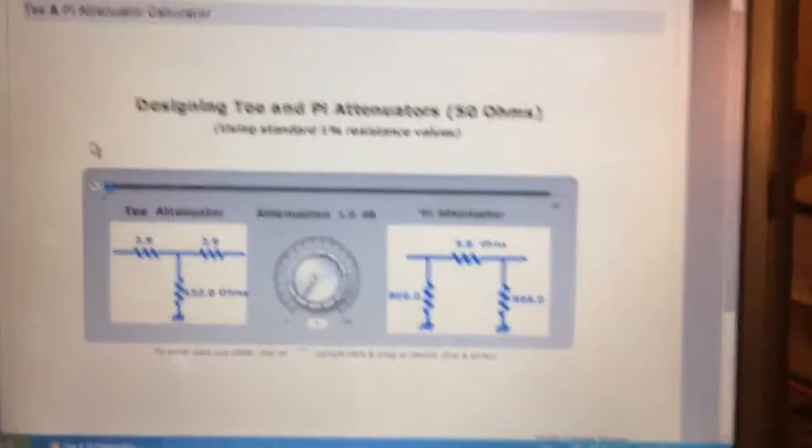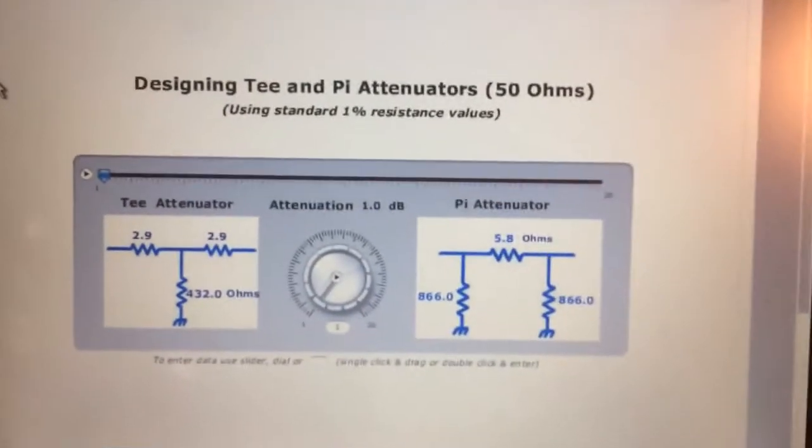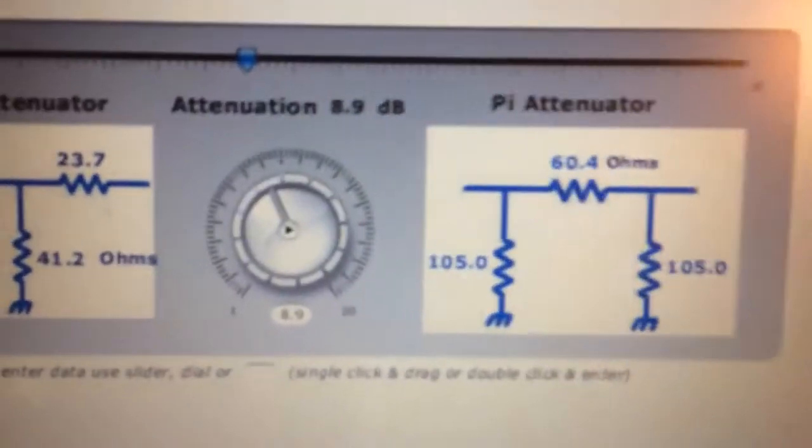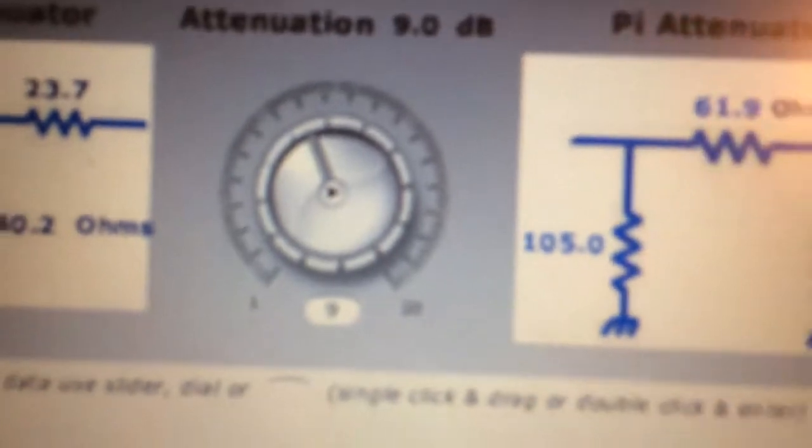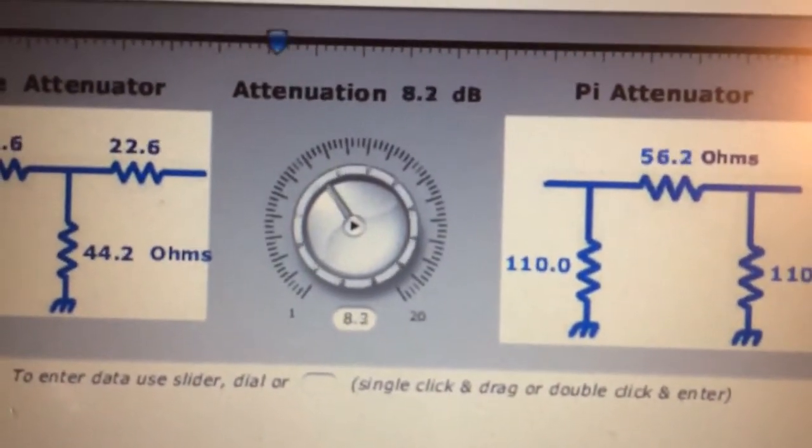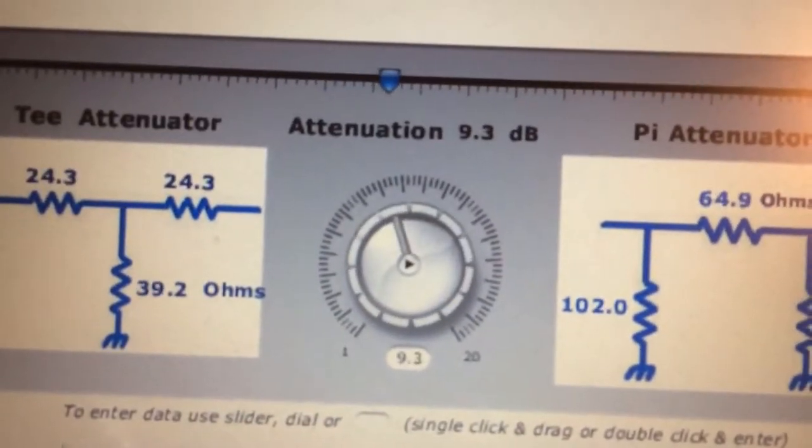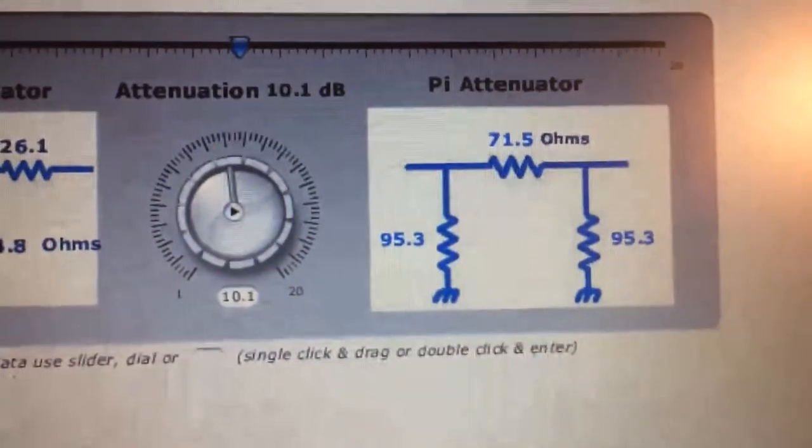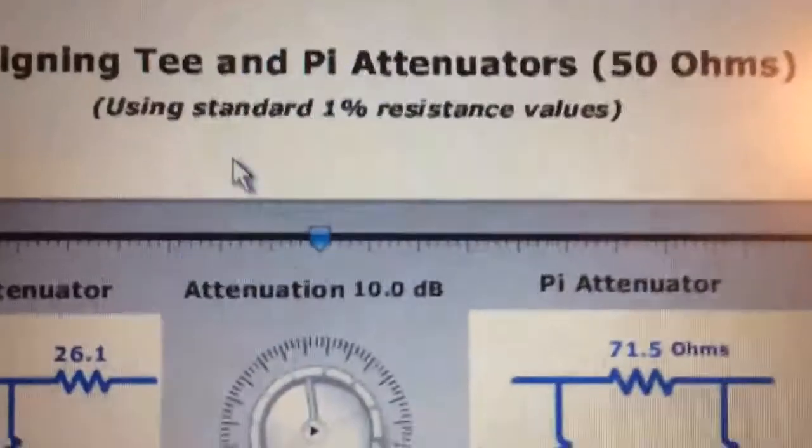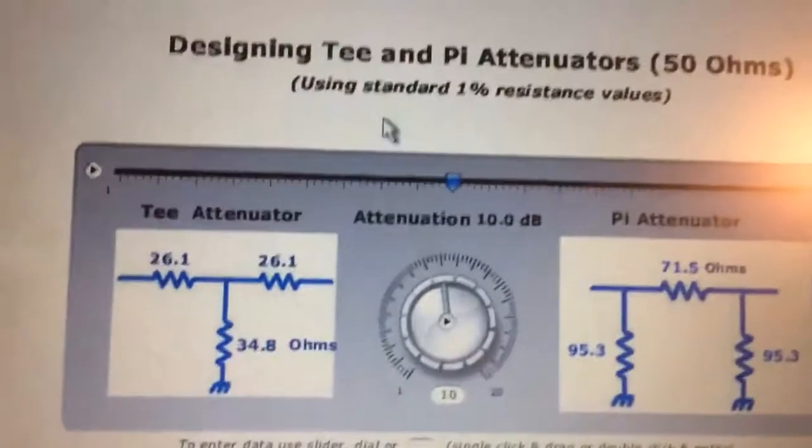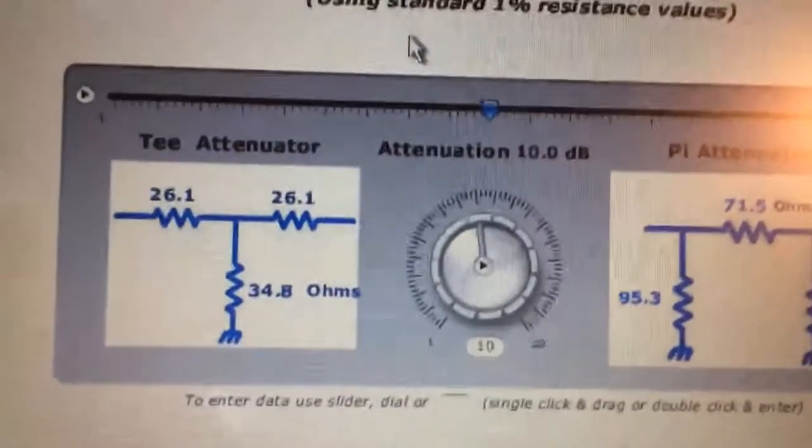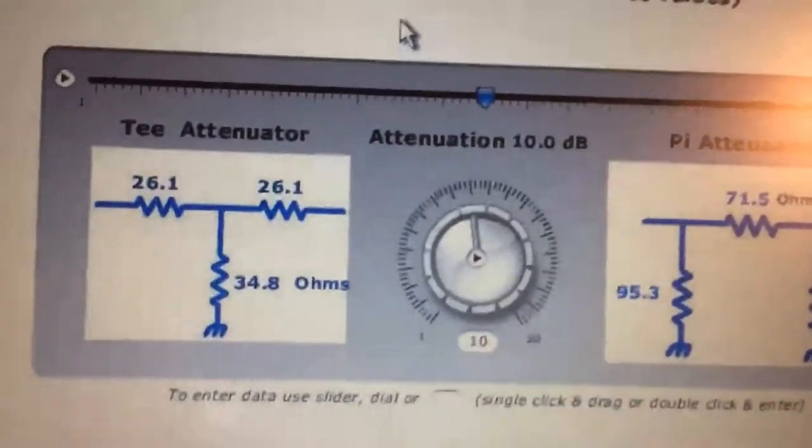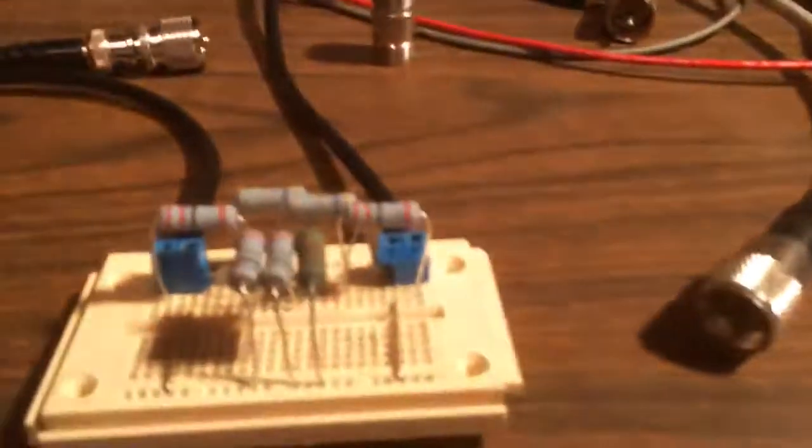Now, I like this particular calculator because it has a slide here. And all you have to do is drag the slide over and you see the dial move. Let me kind of zoom in on that. And it shows you the actual attenuator level. And it's changing the resistor values for both the pi and the T configuration. So if we want to design, let's say, a 10 dB attenuator, we move the slide to 10 dB.